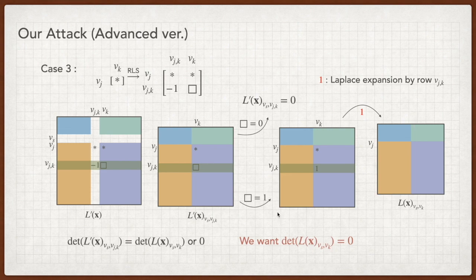Up to now, we delete row Vs, column VK and the intermediate node VJK. So, this minor is equal to 0 or Vs Vk minor of L of X according to the first case. To kill the uncertainty, we want the Vs Vk minor of L of X equals 0.